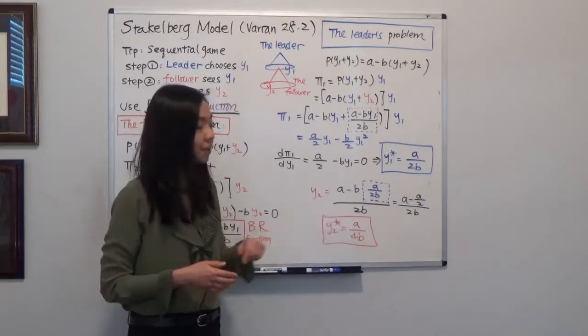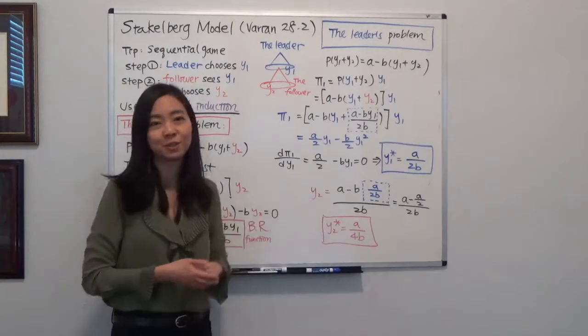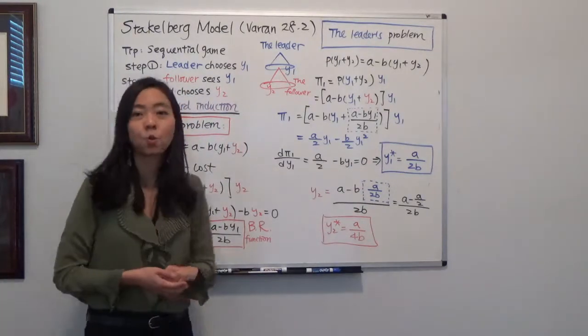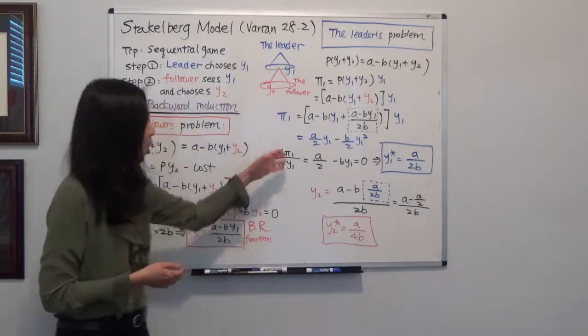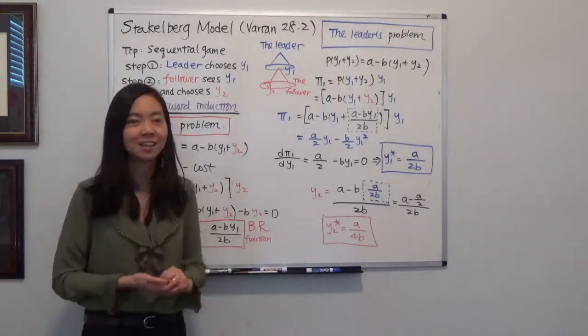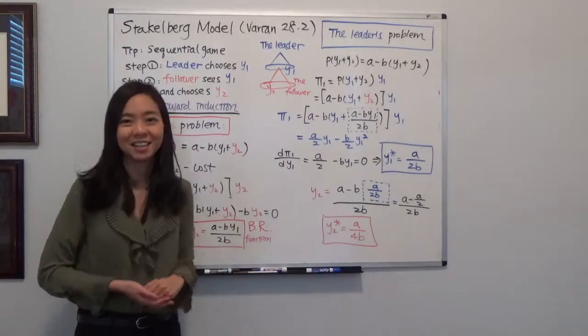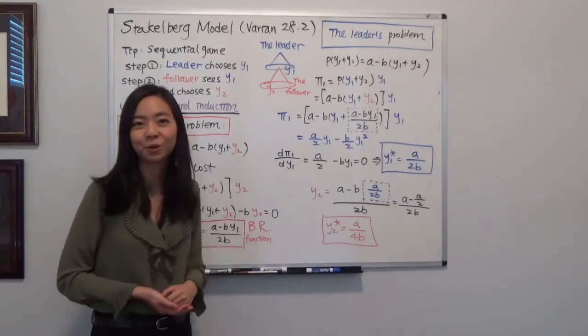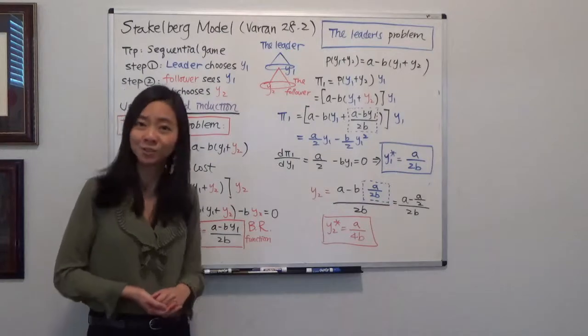So I have calculated how much each firm is going to produce given this quantity leadership model. I hope this helps. The most important thing really is backward induction. And after that, the rest really is just algebra and calculation. I hope this helps and I'll see you next time.